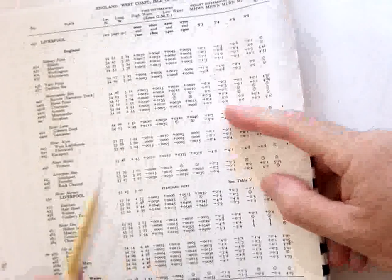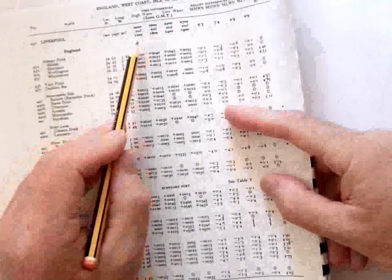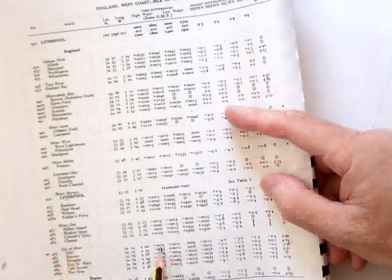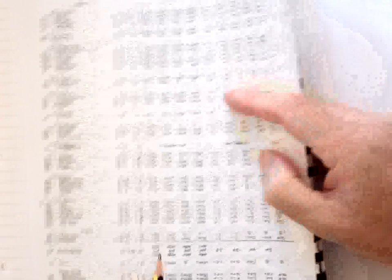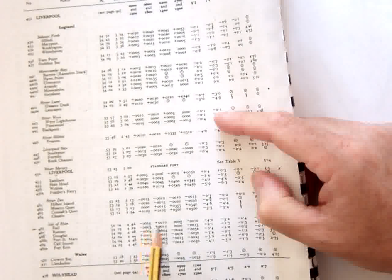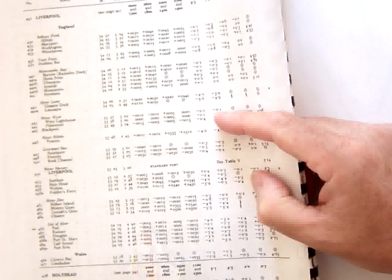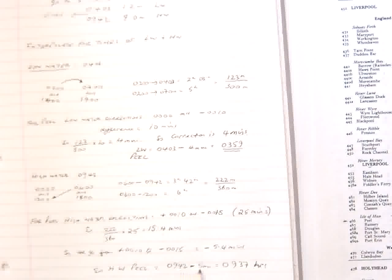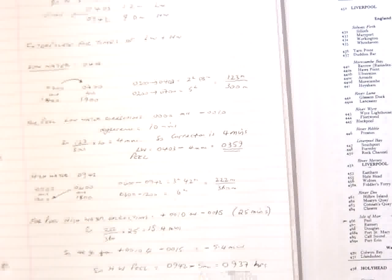So that's our correction that we need to apply to the times here. So we're going from 6 till 12. Therefore, for Peel, we're going from plus 10 to minus 15. So we apply this 15.4 minutes, going from plus 10 to minus 15. So therefore, our time is minus 5.4. Of course, we've got plus 10 there and another 5.4 over to minus sign. So it's minus 5.4. So high water Peel was 0942 at Liverpool. We knock off five minutes. We just round it down because it's less than 5.5. So therefore, the high water time at Peel is 0937.